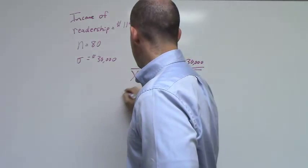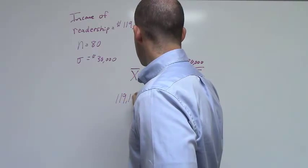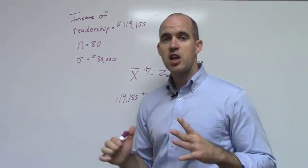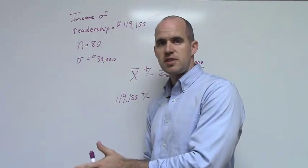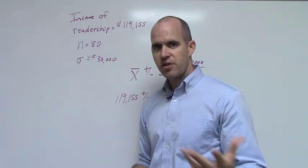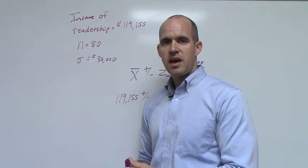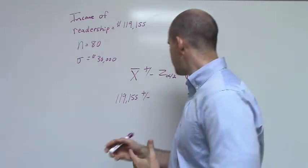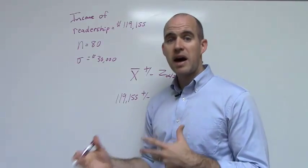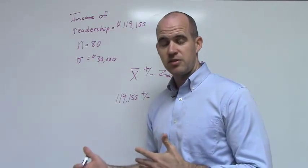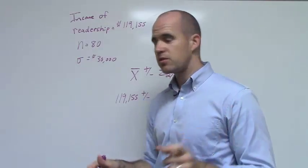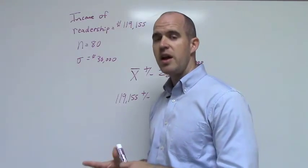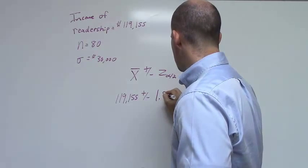Now let's fill in the blanks here. We know that our sample mean is $119,155 plus or minus Z alpha divided by 2. Since I know my population standard deviation I'm going to use a Z score — very easy to find at the front of the book or online. Assuming a confidence level of 95 percent, our alpha is 1 minus the confidence level, that's .05 divided by 2 is .025. And the Z score value that this comes to is always 1.96 — if it's a Z score and it's 95 percent confidence, we're talking about 1.96.